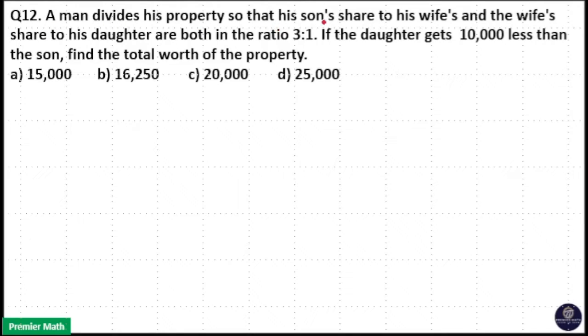A man divides his property such that his son's share to his wife's share, and wife's share to his daughter's share, are both in the ratio 3 is to 1. If the daughter gets 10,000 less than the son, find the total worth of the property.